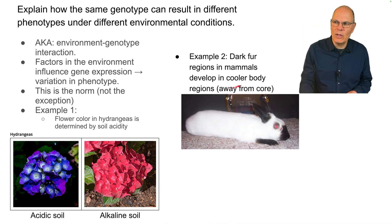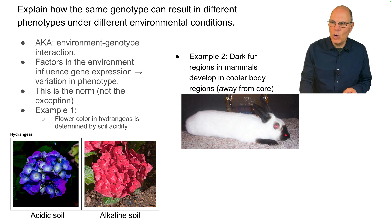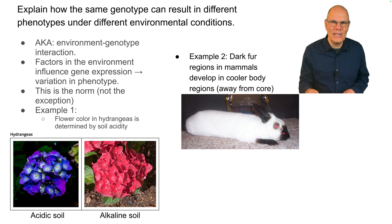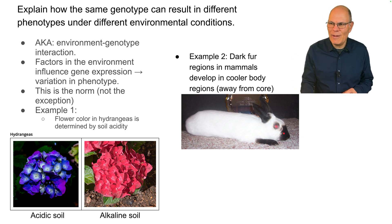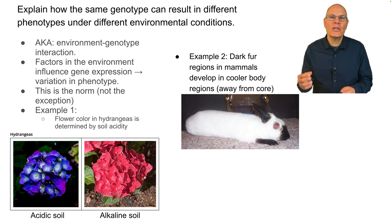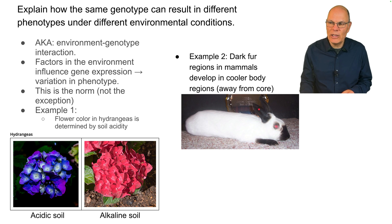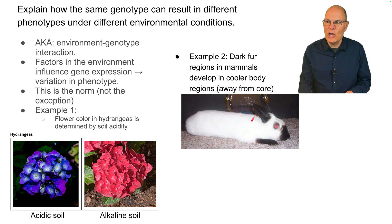Example number two: dark fur regions in mammals develop in cooler body regions away from the core. This is a Himalayan rabbit, but if you picture a Siamese cat, it's pretty much the same thing. The ears, paws, and nose are cool regions, and all the cells have the same genes, but the cells exposed to cooler temperatures express different pigment alleles than those in the warmer regions of the body.